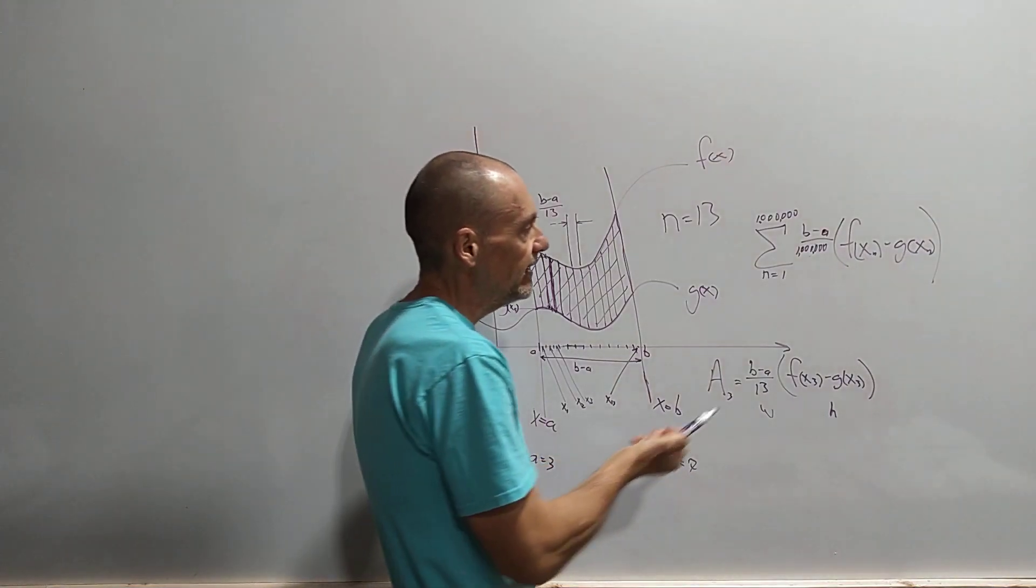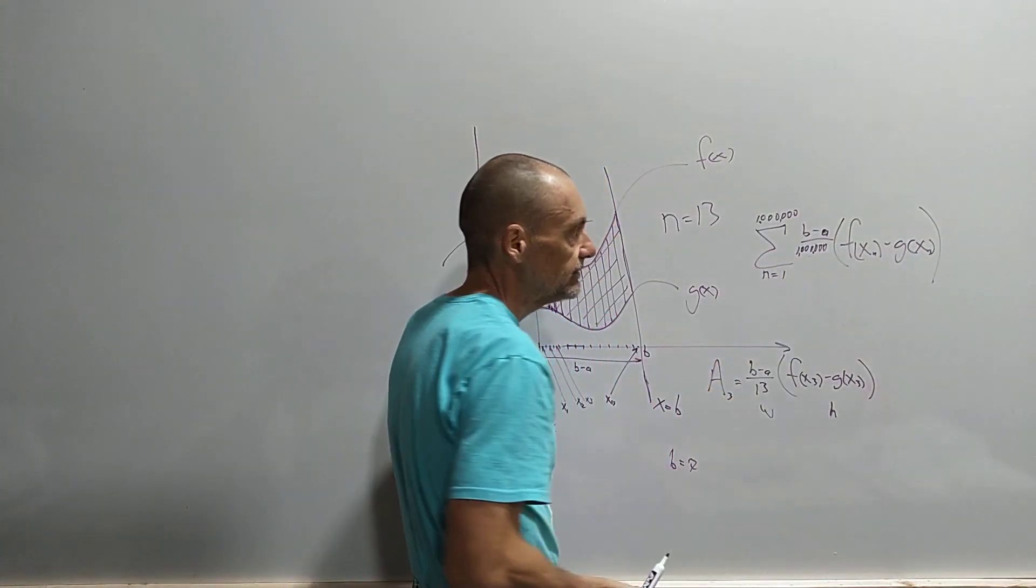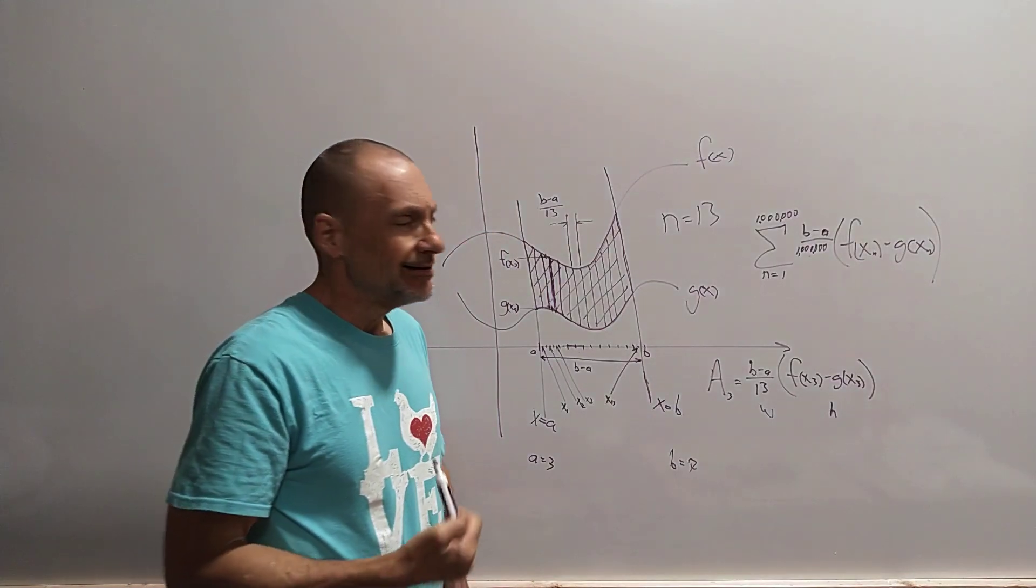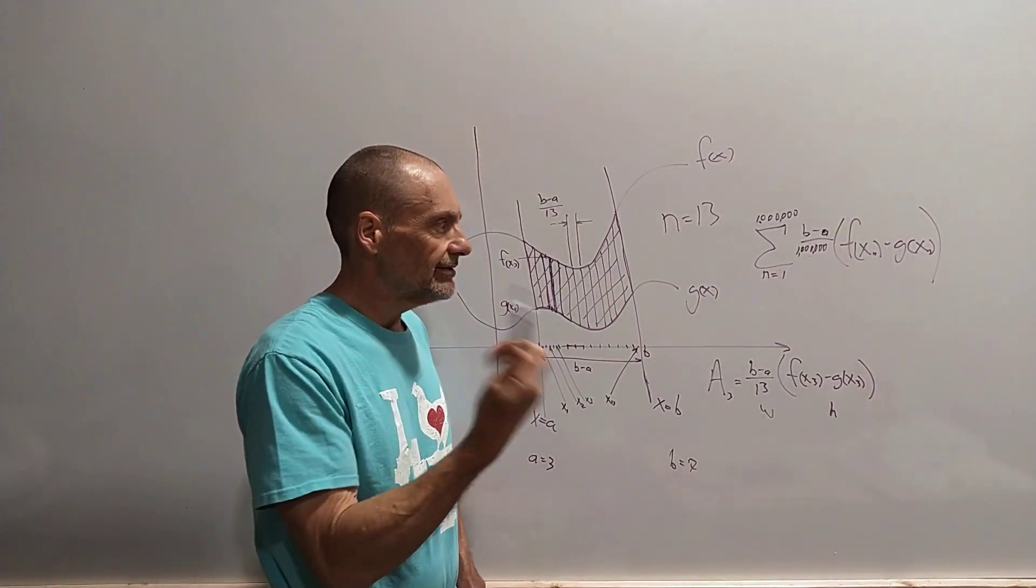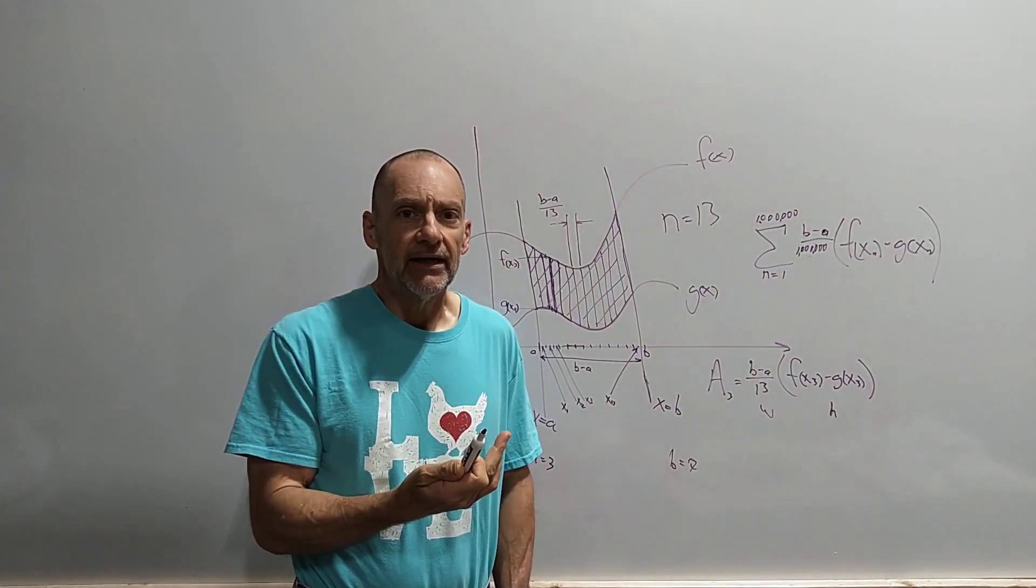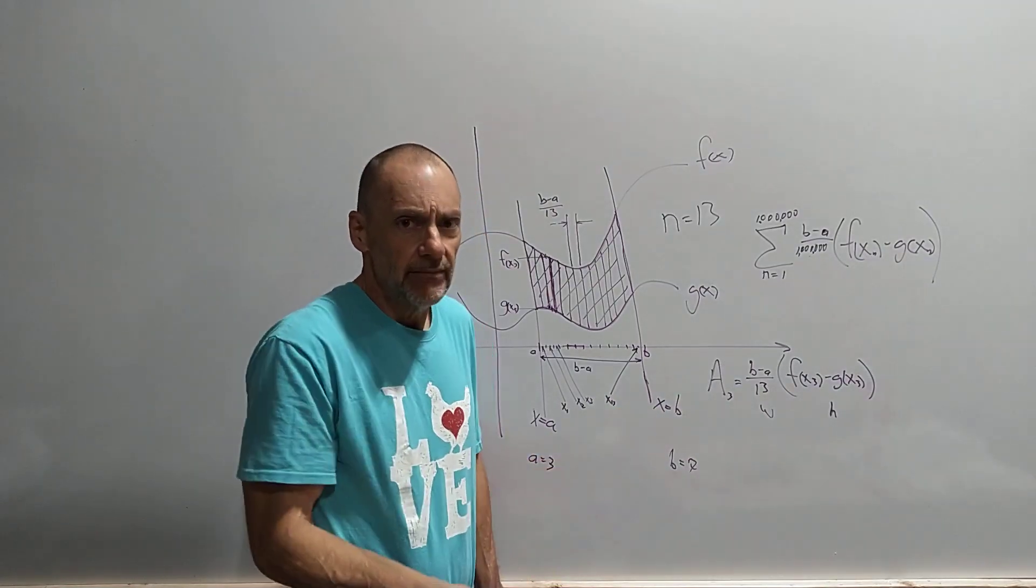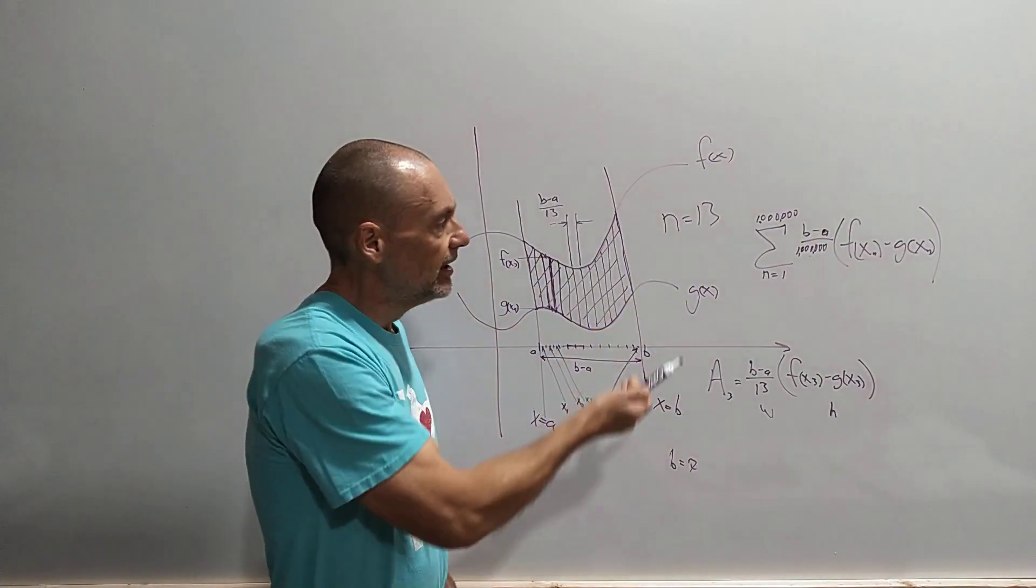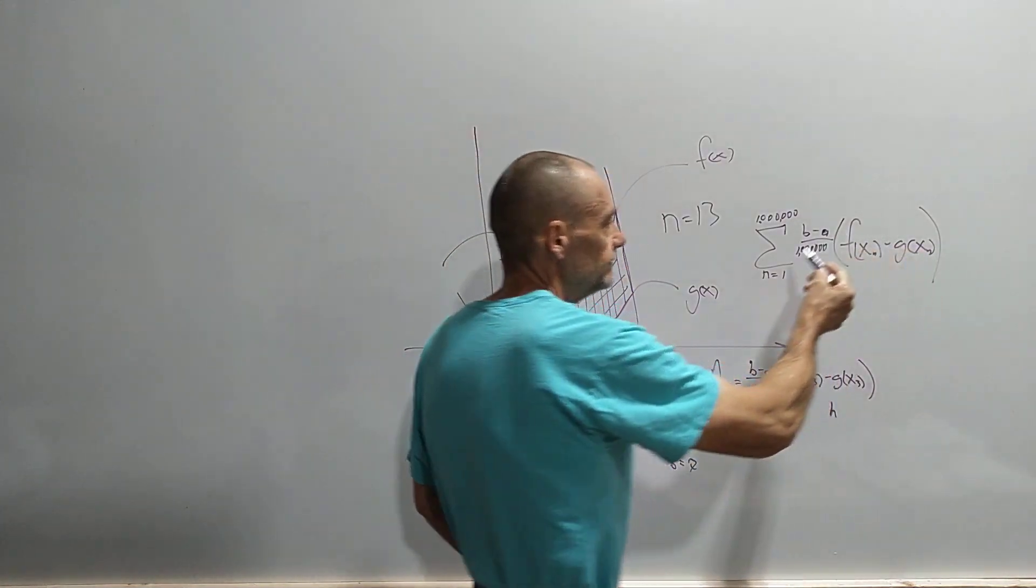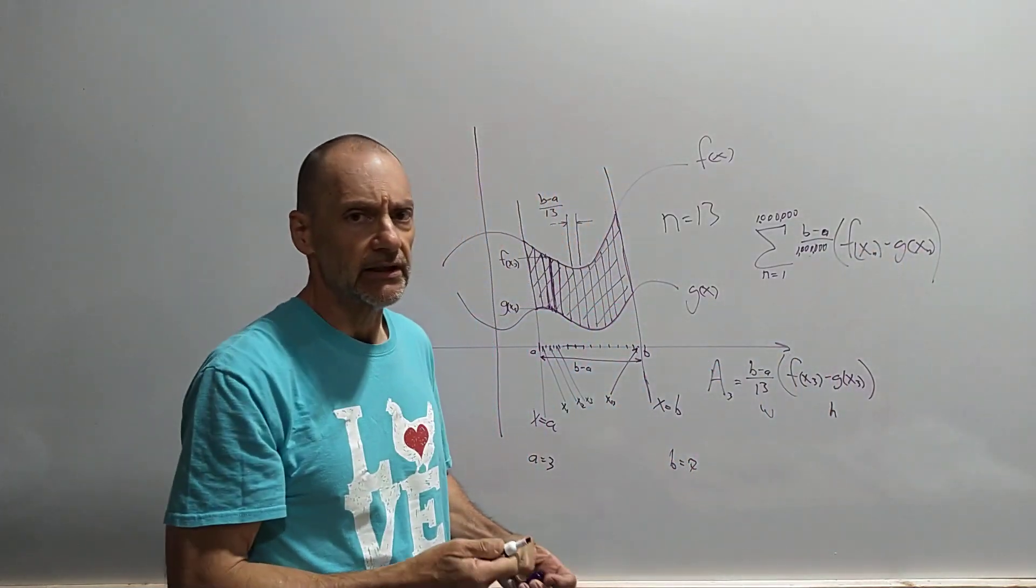Now, this thing right here, you're adding a million terms together. Something should pop into your head right away - what do you want to use to add a million terms? A computer, right? A computer can handle this sum very, very quickly.